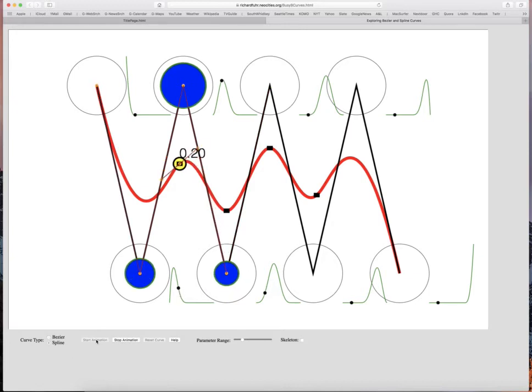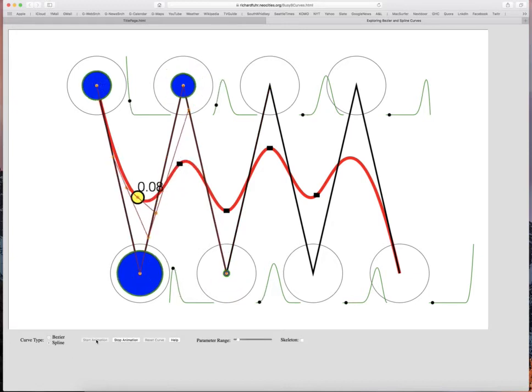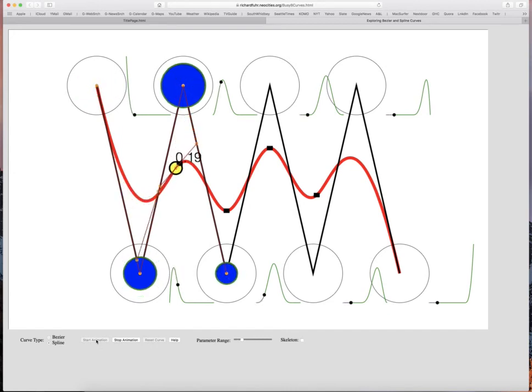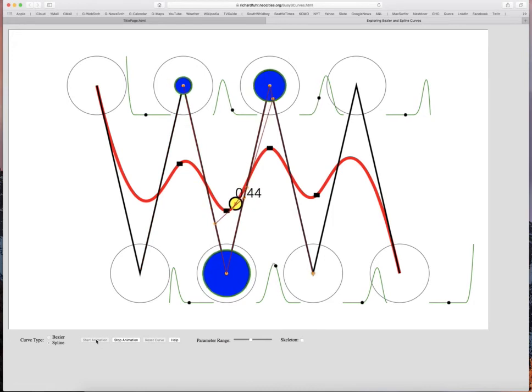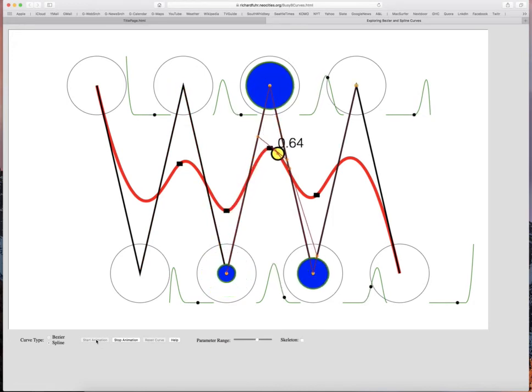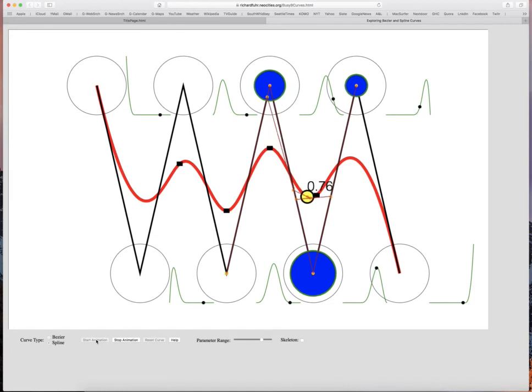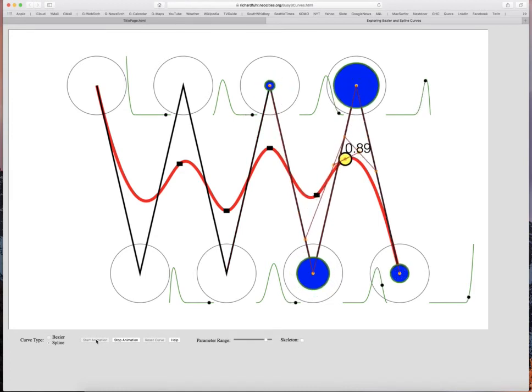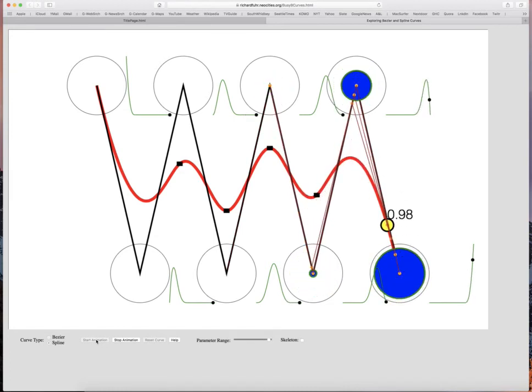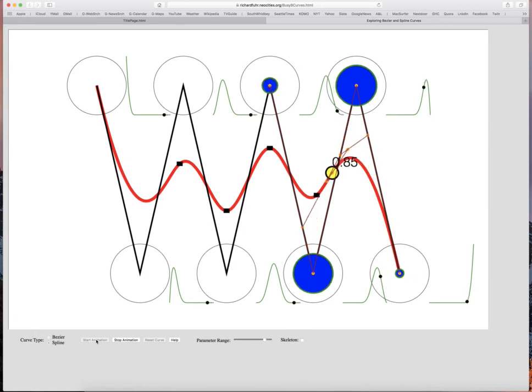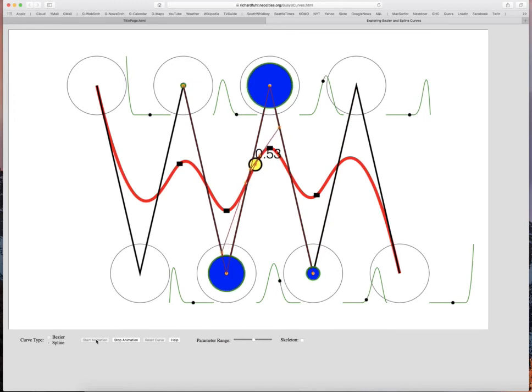So if I do the start animation, then we see the yellow point moves along the curve. And once again, as in the Bezier case, we see the blue circles expand and contract. But one critical difference here is that at most, four of the circles have blue in them. So the yellow point is always at the center of mass of the four blue circles.